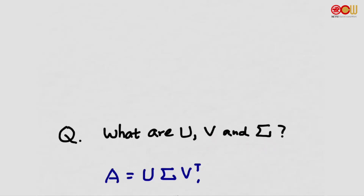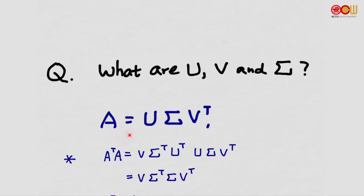Suppose A equals U sigma V-transpose. Let's consider the product A A-transpose. A is U sigma V-transpose, and A-transpose is V sigma-transpose U-transpose. Since U is orthogonal, U-transpose U becomes the identity. We are left with V sigma-transpose sigma V-transpose. This sigma-transpose sigma is a diagonal matrix.